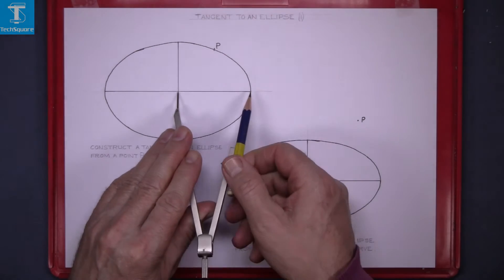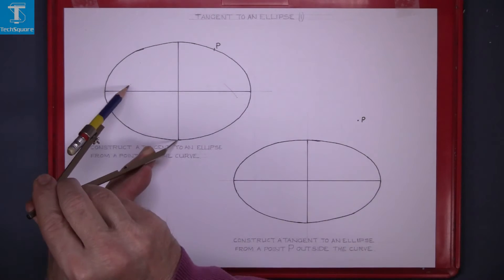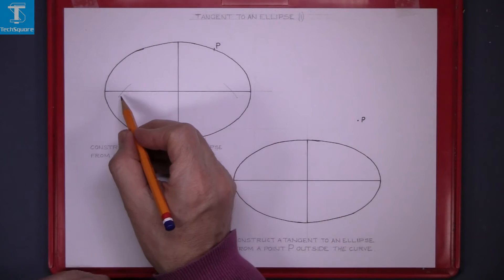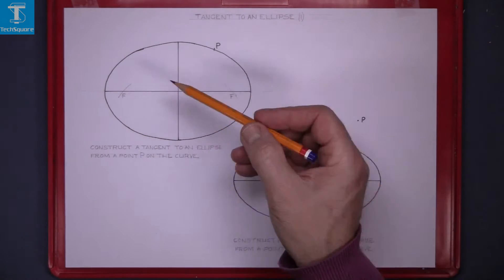The first thing we have to do is find the focal points. So set the compass to half the major axis, put the pointer compass in the end of the minor axis and draw an arc on the major axis. That gets you the two focal points.